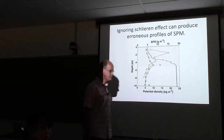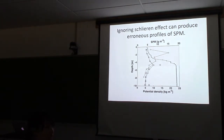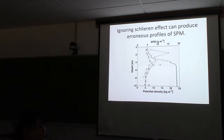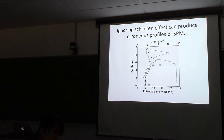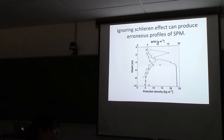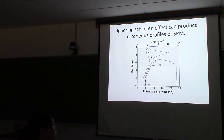A colleague points out that it's really important that the backscatter and AC9 attenuation give the same profile because they're measuring in two completely different ways. The AC9 is pumping through and therefore isn't getting Schlieren, but might be breaking aggregates - which could give rise to the difference with the LISST. The backscattering sensor isn't breaking up particles but still sees the same thing - which rules out aggregate breakup as an explanation.